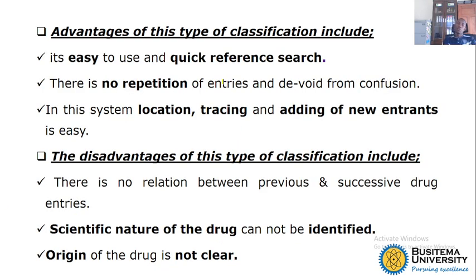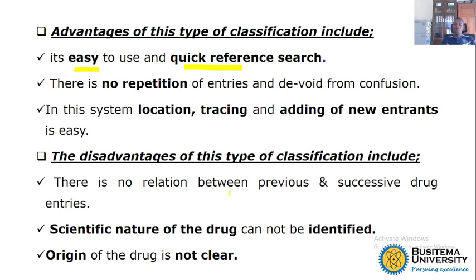The advantage of classifying a natural drug alphabetically is that it is easy, it is quick for reference search, and there is no repetition — for example, Nux vomica can always be one entry. The disadvantage is that the origin is not always clear and the scientific nature of the drug is not always identified.